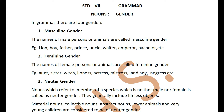Now, whether it is a male, whether it is a female, or whether it is neither of these — that tells you the gender of the noun. In a noun, there are four types of genders: the first one is masculine, feminine, neuter, and the next one is common gender.